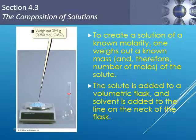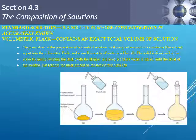In lab, we often need to make a standard solution, which is a solution whose concentration is accurately known. To do this, we use an electronic balance to get an exact mass and a volumetric flask for an exact volume. The volumetric flask has only one marking, called a calibration mark, with typically less than 0.5% error. We weigh out a specific amount of solute, add a small quantity of water, swirl to dissolve, then add water until we reach the calibration mark.